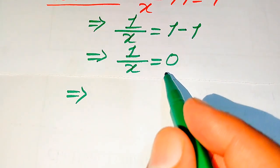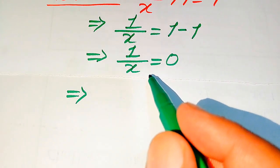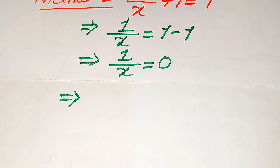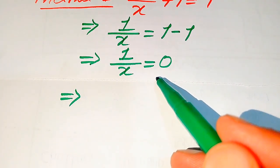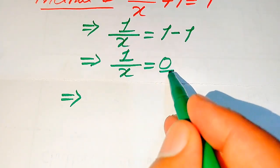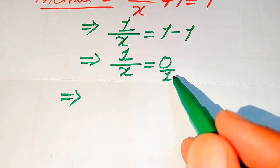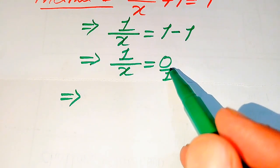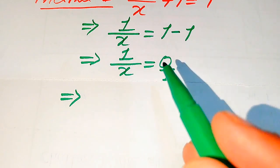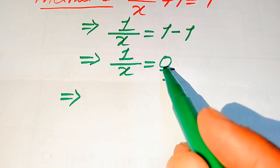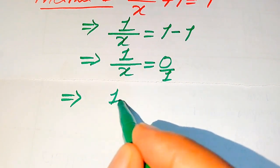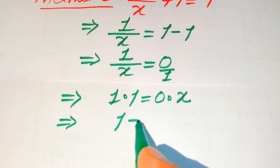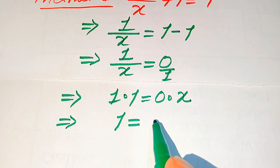This implies that 1 over x equals 0. To find the value of x, we have two ways. One is to take the reciprocal of both sides: the denominator of the right-hand side is 1, so taking the reciprocal makes the right-hand side infinity, meaning we cannot get any finite value of x. Alternatively, when we cross-multiply, we get 1 times 1 equals 0 times x — that is, 1 equals 0.